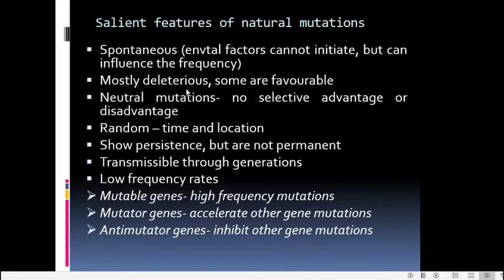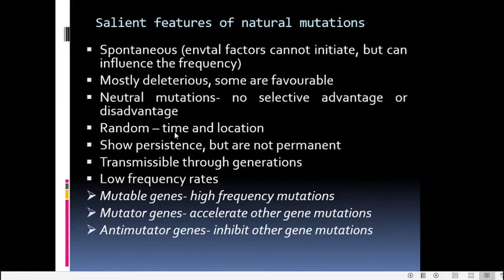Mostly mutations are harmful, but some are favorable. Neutral mutations are those which give neither a selective advantage nor a disadvantage to an organism. The process is quite random — the time and location of appearance of a mutation, and the chromosomal locus and stage of cell cycle in which it occurs, are all random with no fixed time or location.